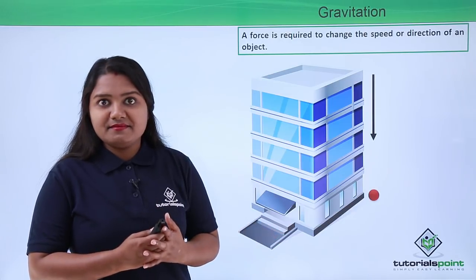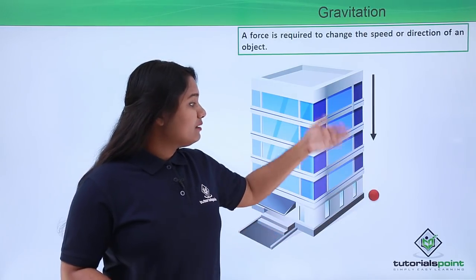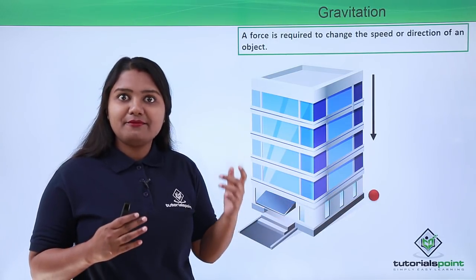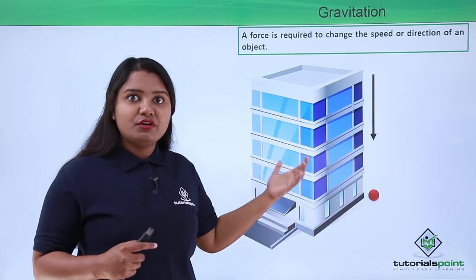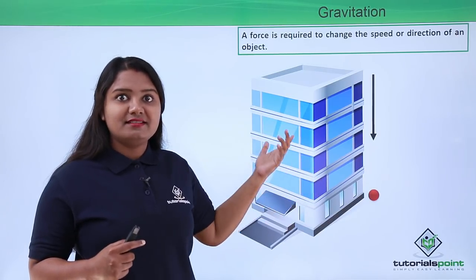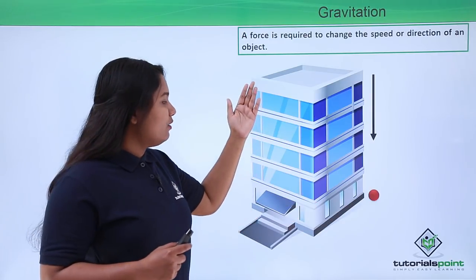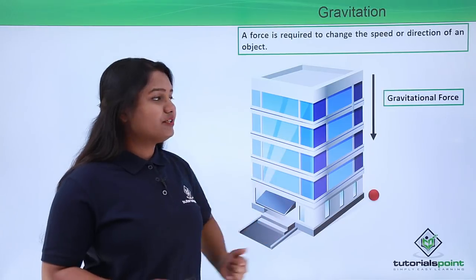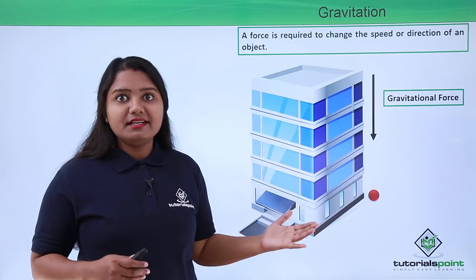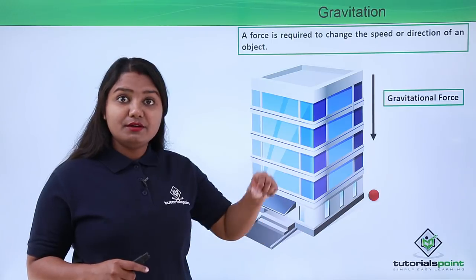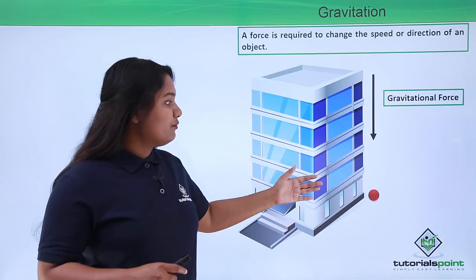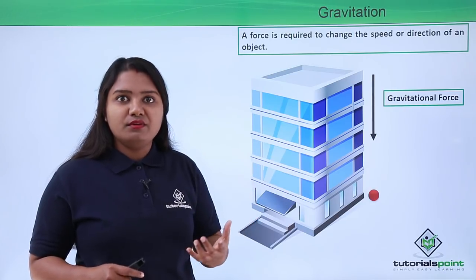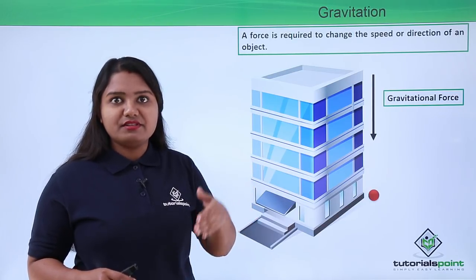Now why does that happen? The ball starts moving, which means there must be some externally applied force onto the ball — otherwise it would not change its state of rest and start moving. This force is what we call the gravitational force, which is exerted by the earth on all objects near its surface, causing them to fall towards the surface of the earth when released from a height.